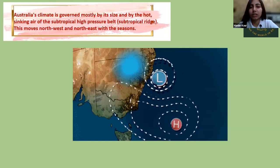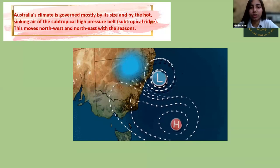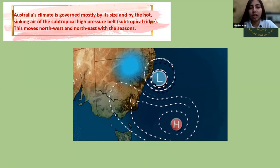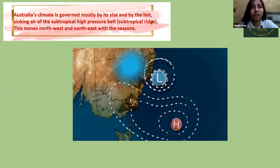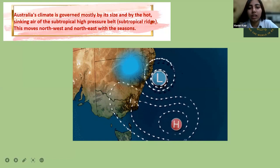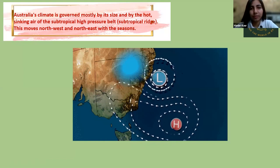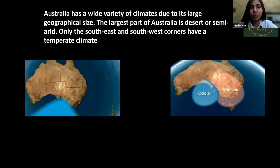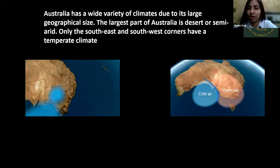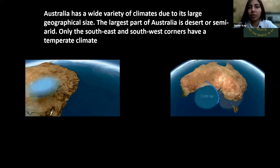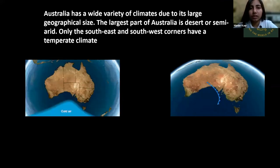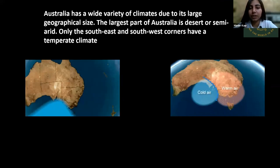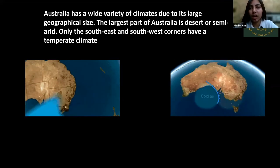Now we'll discuss a little about the climate. Australia's climate is governed mostly by its size. There is hot sinking air in the subtropical high pressure belts — here in the image you can see the hot air and cold air over the region. Australia has a wide variety of climates because of its geographical size. The largest part of Australia is desert, and only the southeast and southwest corners have a temperate climate; other regions are usually quite hot.